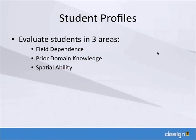For student profiles, the three areas we found most important in figuring out how a student learns are their field dependence, their prior domain knowledge, and their spatial ability. If we can evaluate an individual student online in each of these three areas, we can figure out how we're going to deliver information to them.